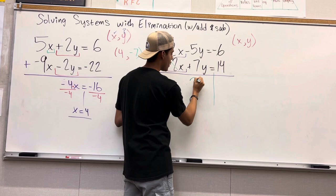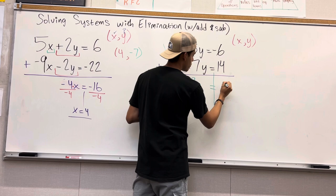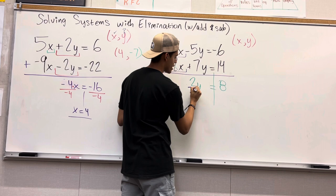Negative 6 plus 14 would give you positive 8. And this multiplication, do the opposite. Divide 2 by both sides. We are solving for y. And we get y equals 4.